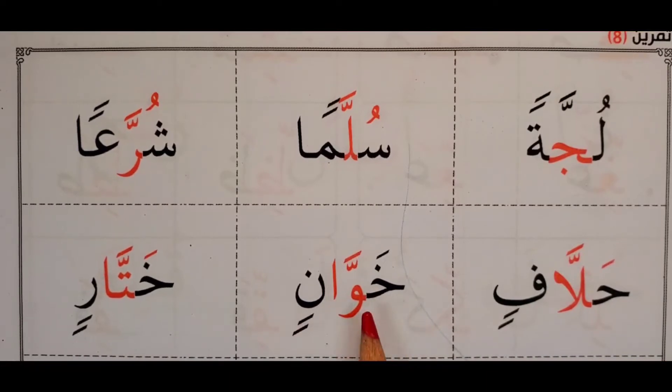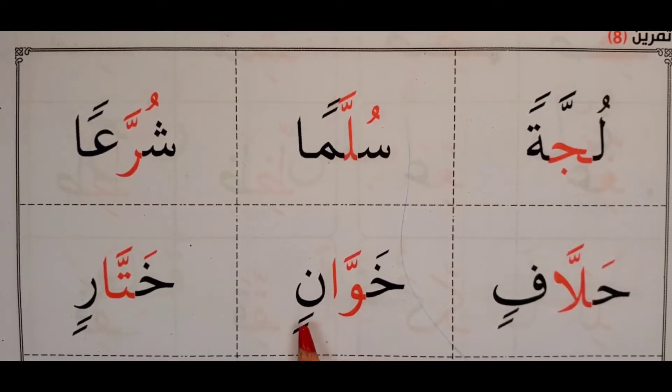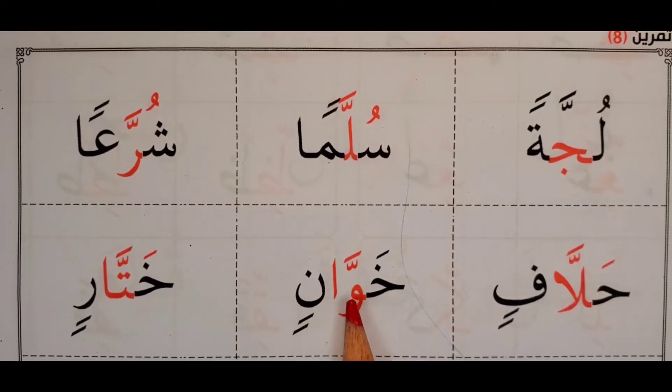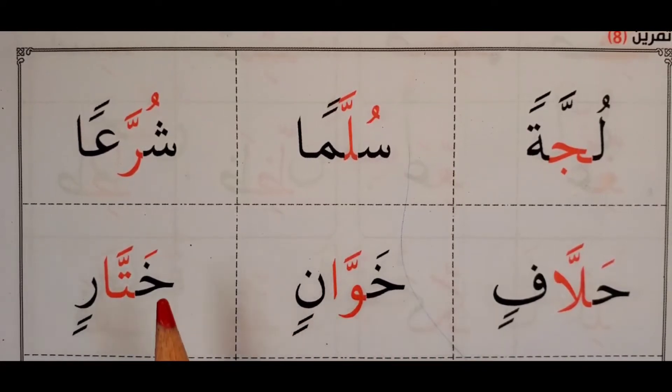Khawwanin. Khawwanin. Look at the waw — it's long, it has an alif.